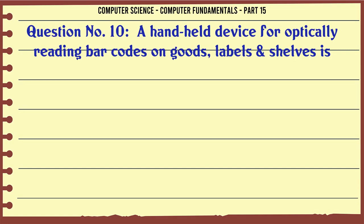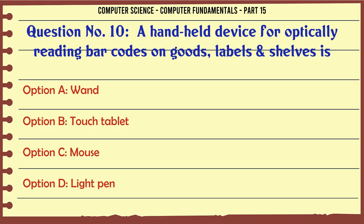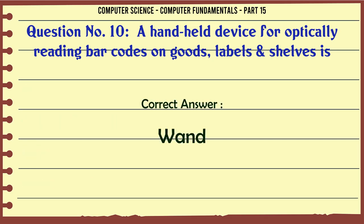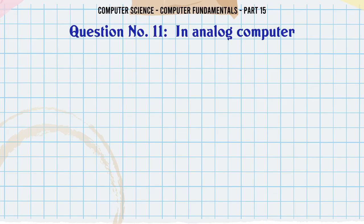A handheld device for optically reading barcodes on goods, labels, shelves is: A. WAND B. Touch tablet C. Mouse D. Light pen. The correct answer is WAND.